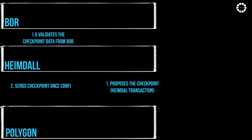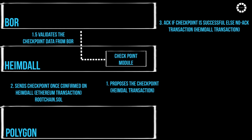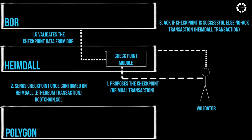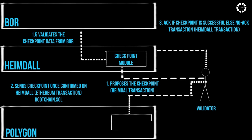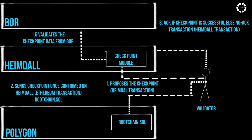Each checkpoint has a validator as the proposer. The outcome of a checkpoint on the Polygon chain — success or failure — triggers an ACK (acknowledgement) or NOACK (no acknowledgement) transaction, altering the proposer for the next checkpoint on Heimdall. The root hash is calculated as a Merkle hash of Bohr block hashes from start block to end block.